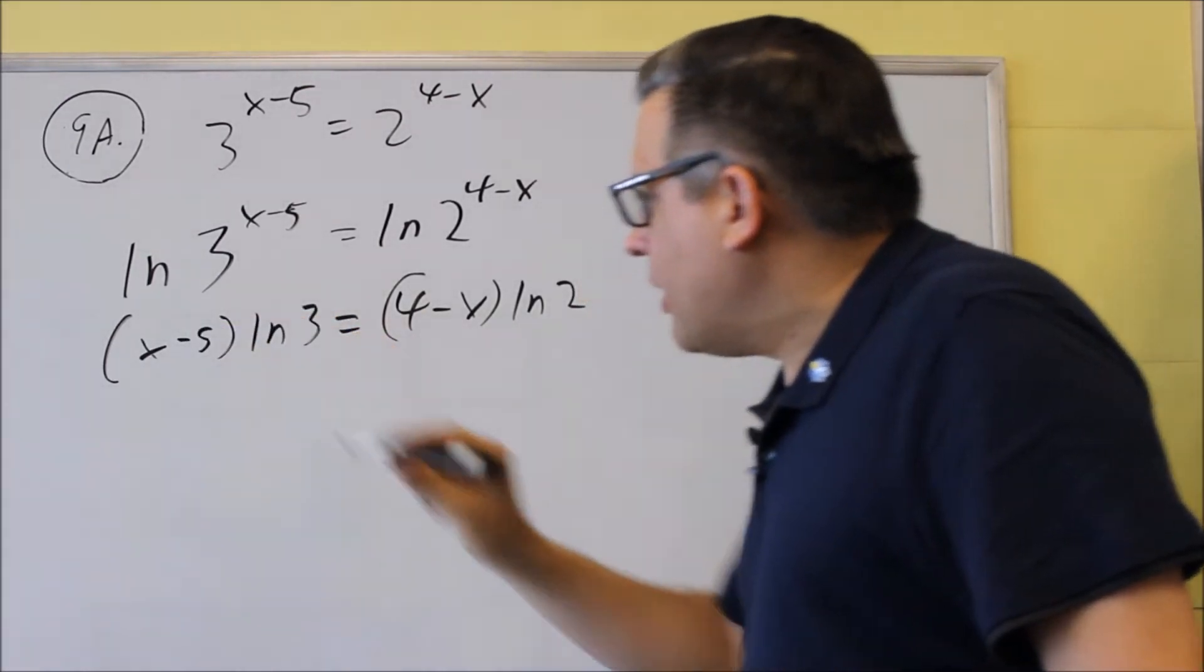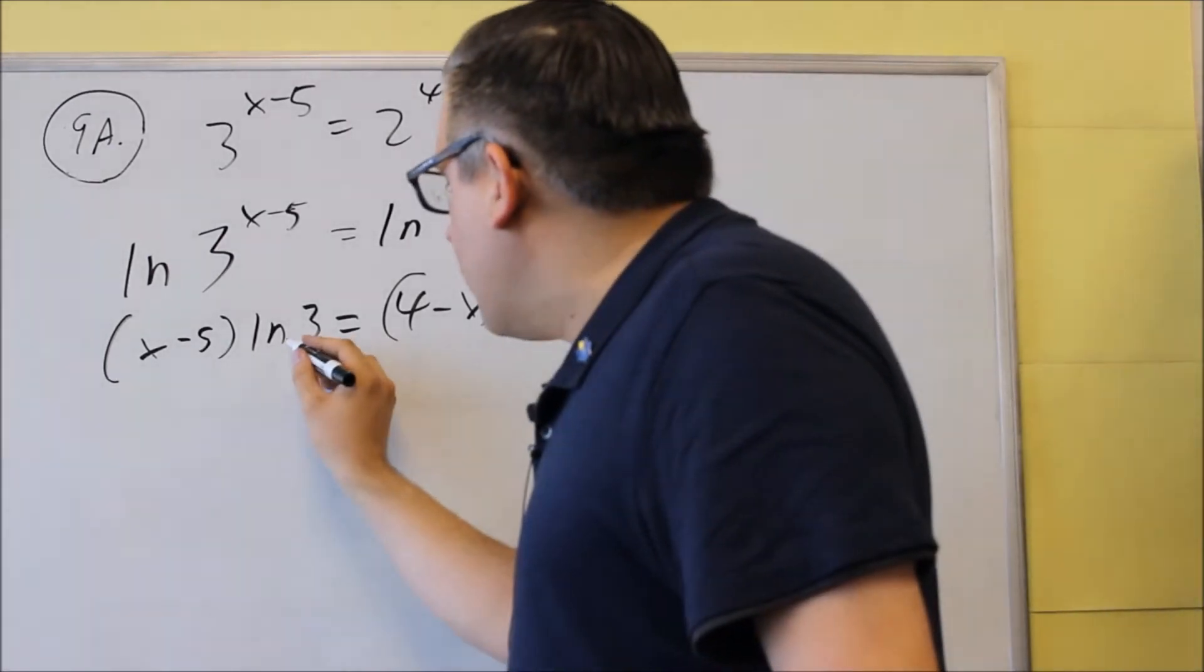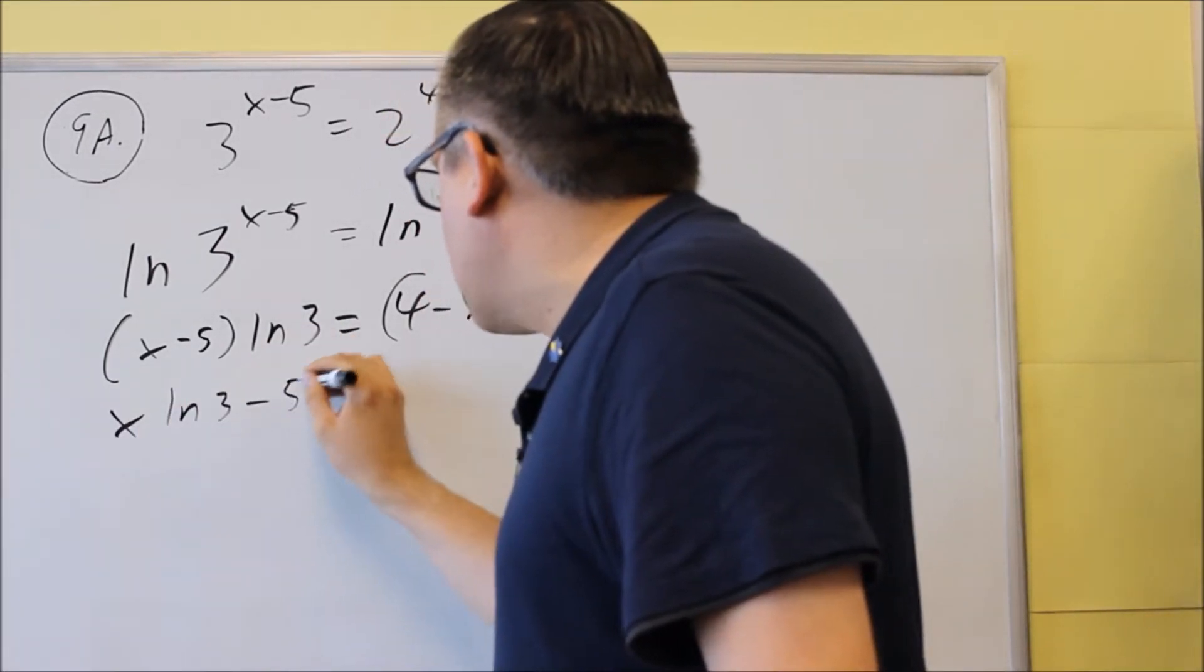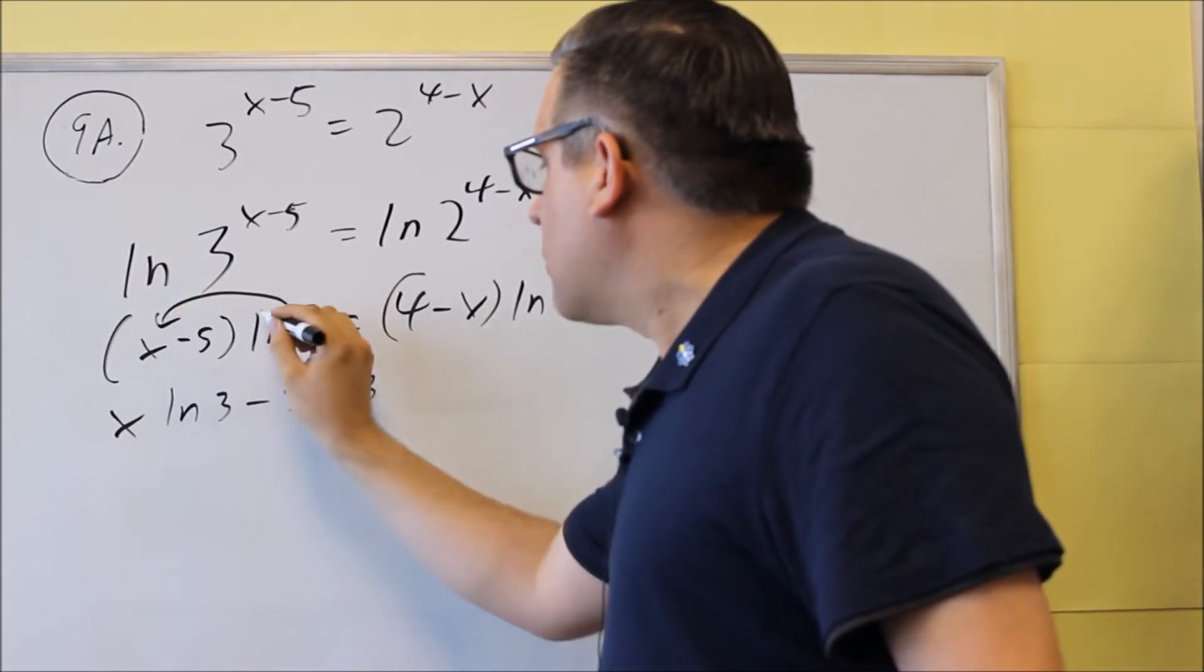So now we're going to multiply both by natural log of 3. And if we do that, we get x ln 3 minus 5 ln 3. We're going to distribute that. We're multiplying this through.